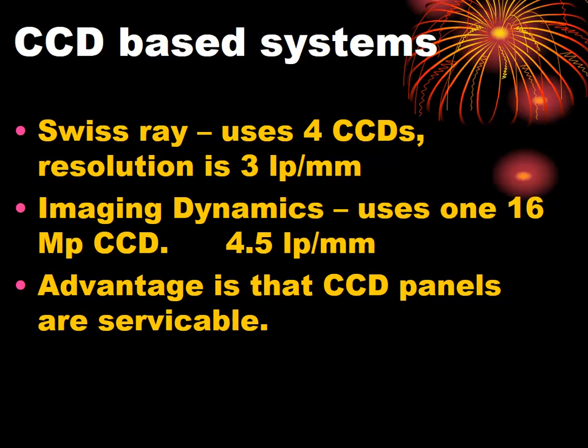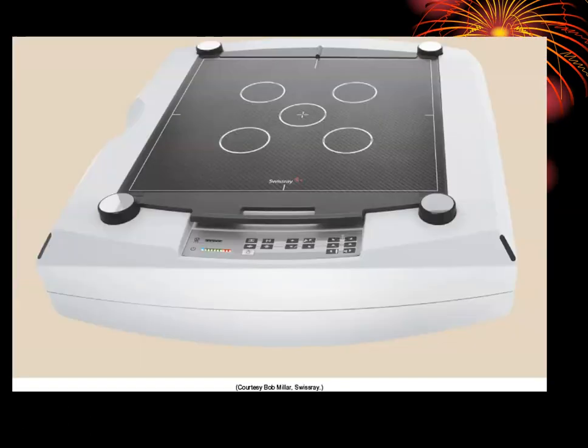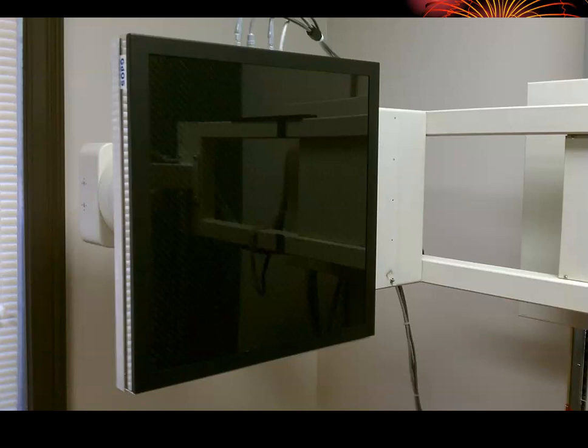CCD-based systems were among the first direct-capture types. They used a scintillator plate that emitted light when struck by x-rays, with a digital camera array behind it that photographed the scintillator image. CCD plates have one advantage: they are serviceable and modular — if something breaks, a technician can diagnose and repair the components. Direct capture flat panel systems, by contrast, cannot be repaired; if they break, they must be replaced entirely.